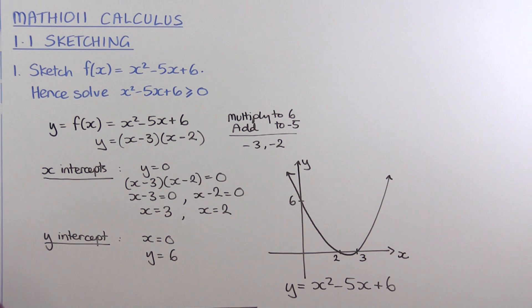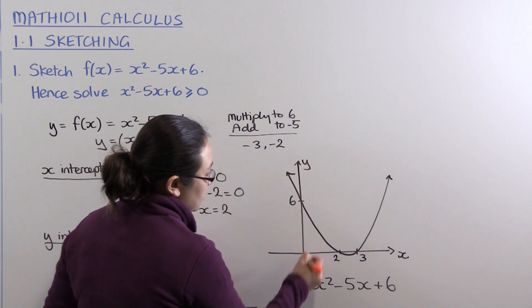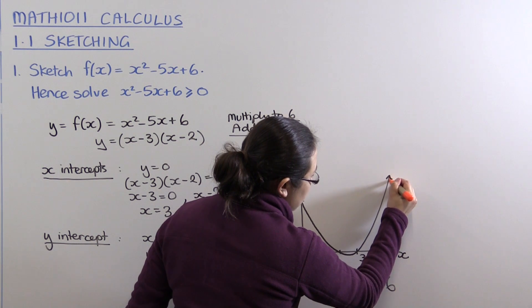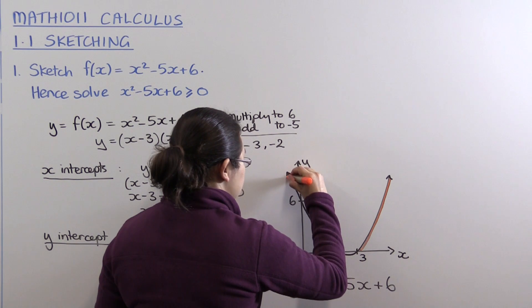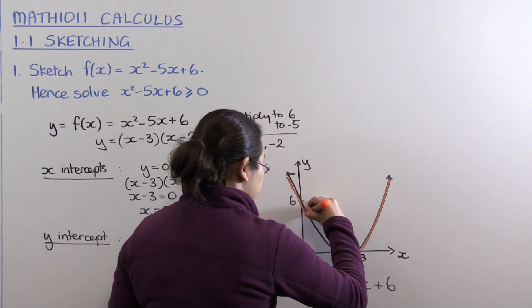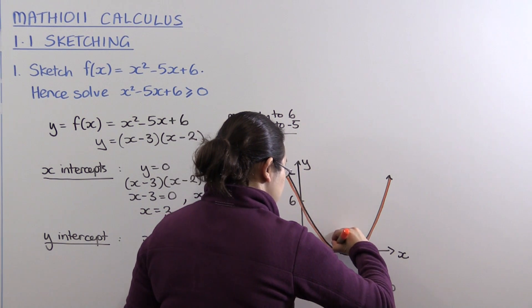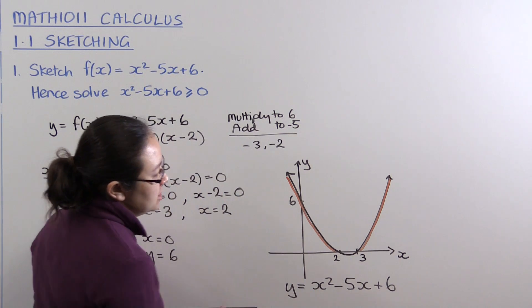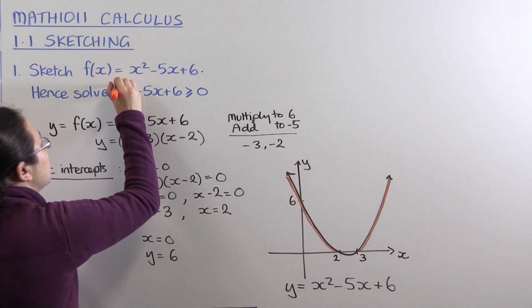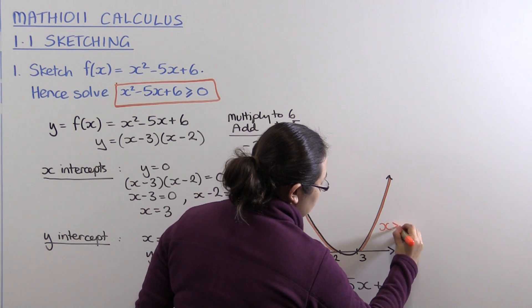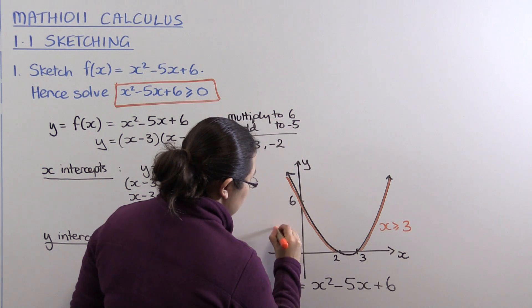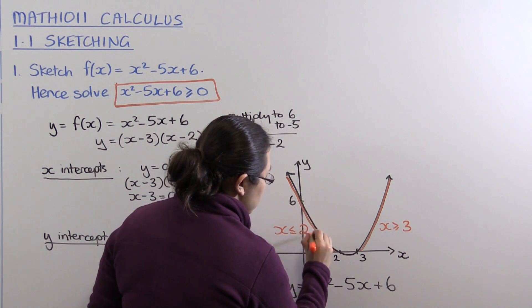The y-value on the vertical axis is greater than or equal to 0 when it's positive - above the horizontal axis in these two sections. So the y-value is positive when x ≥ 3 and when x ≤ 2.